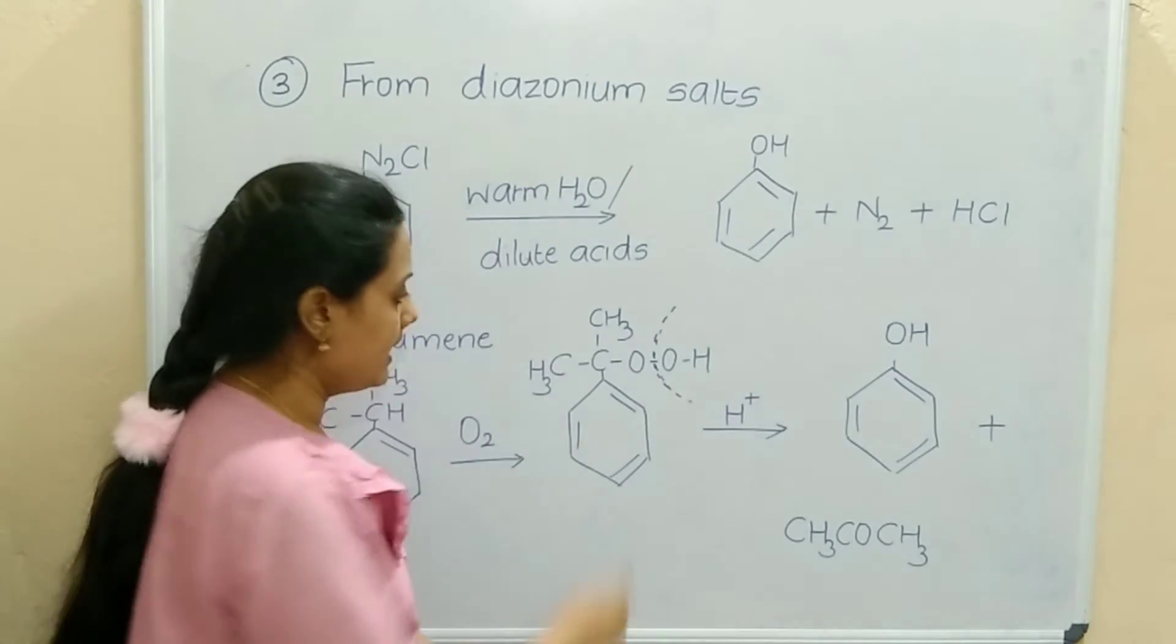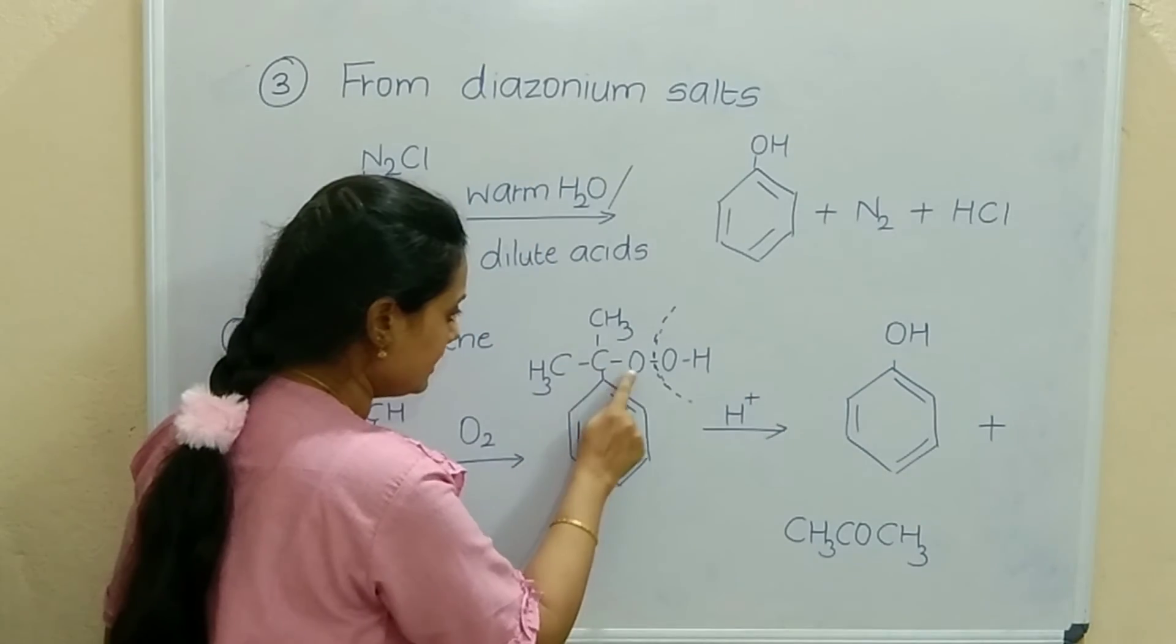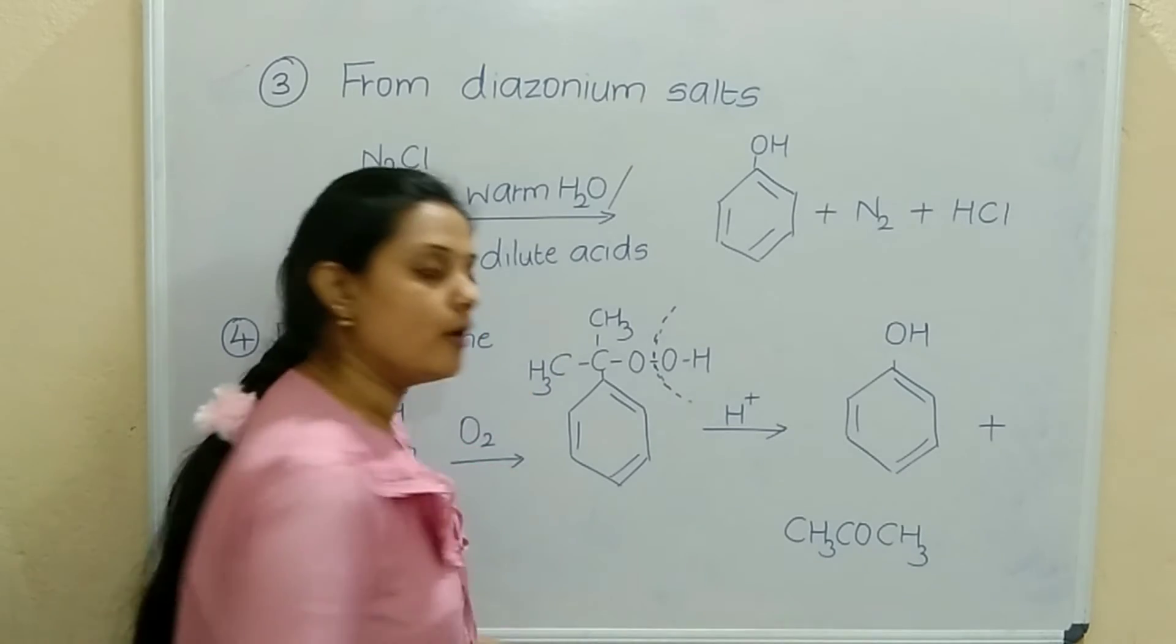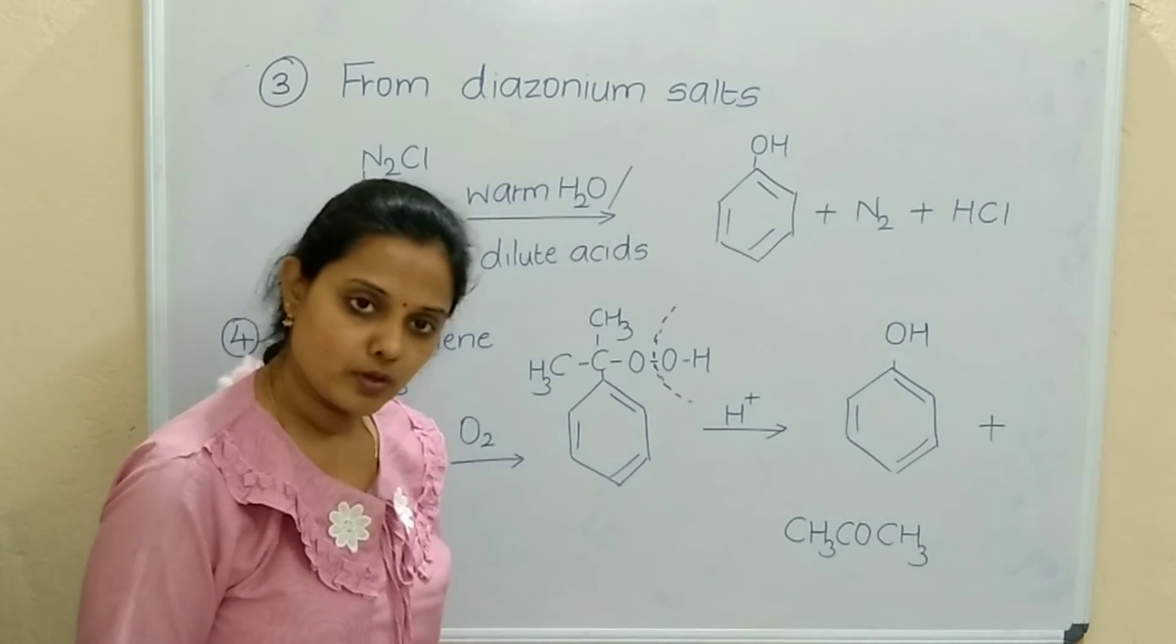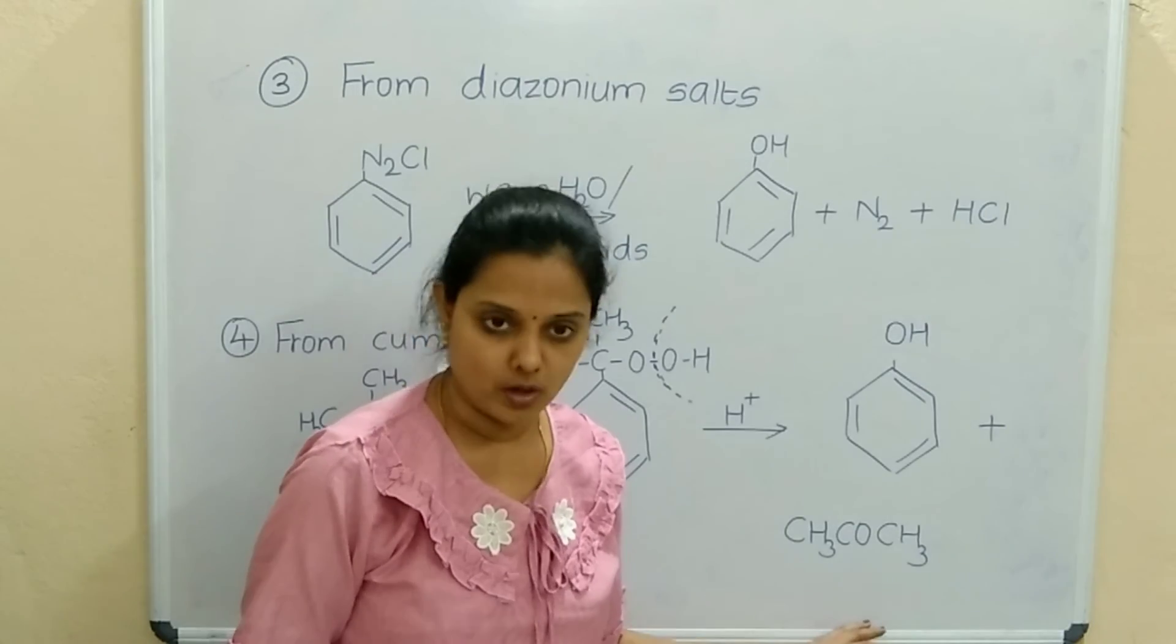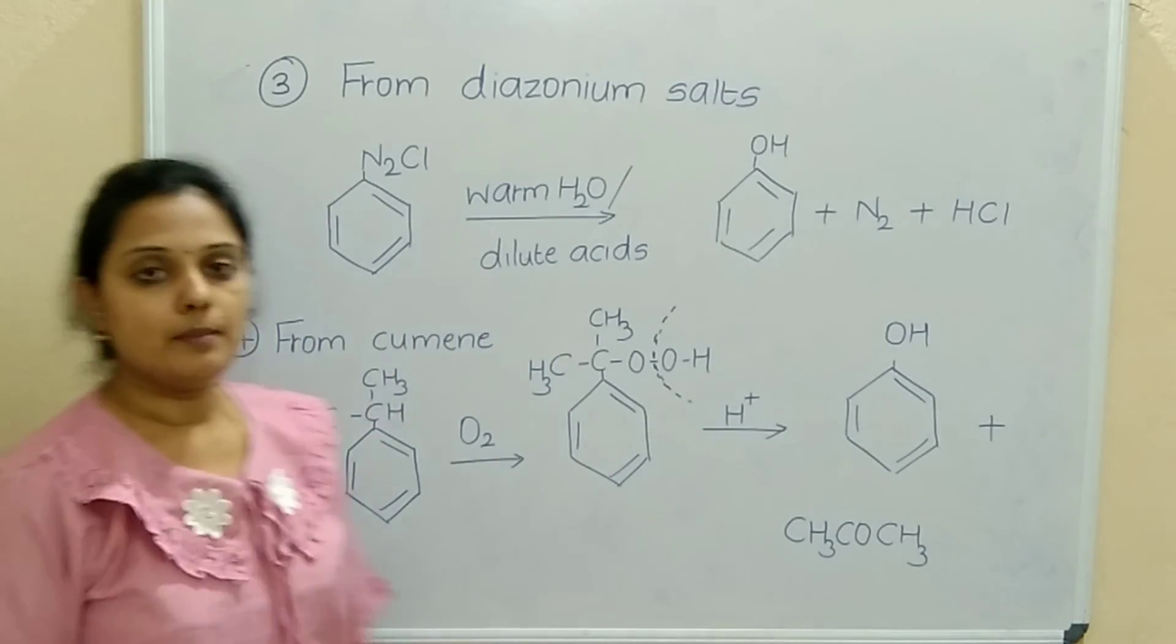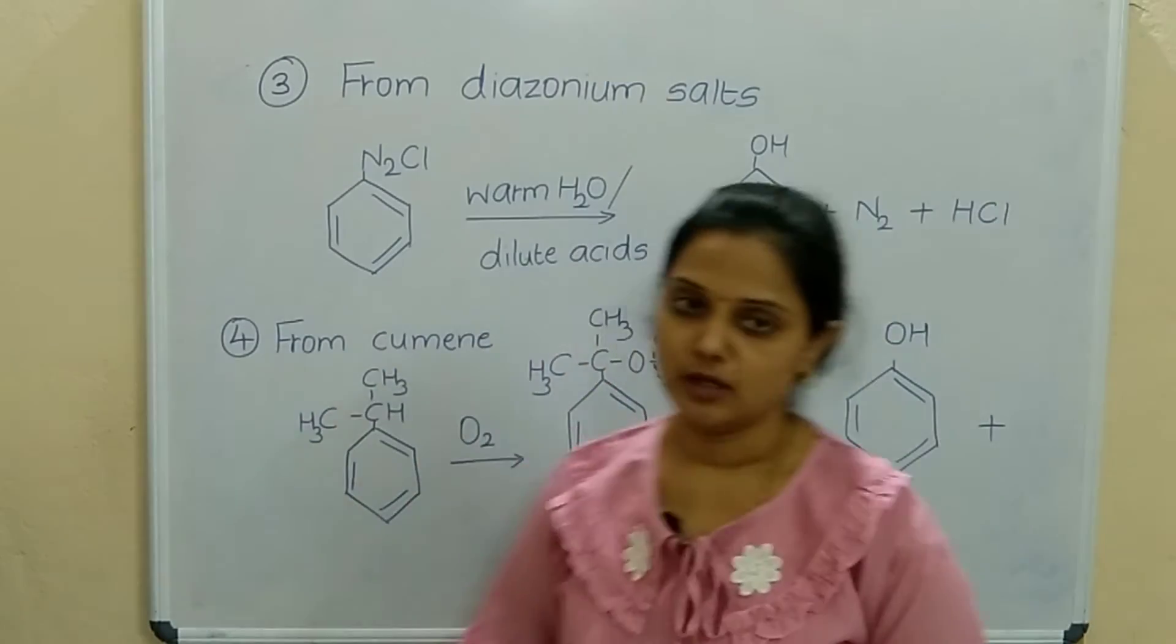We are getting phenol and this part CH3COCH3. It forms the by-product, that is a ketone compound, that is three carbons of propanone. We complete here with the preparation of phenols.